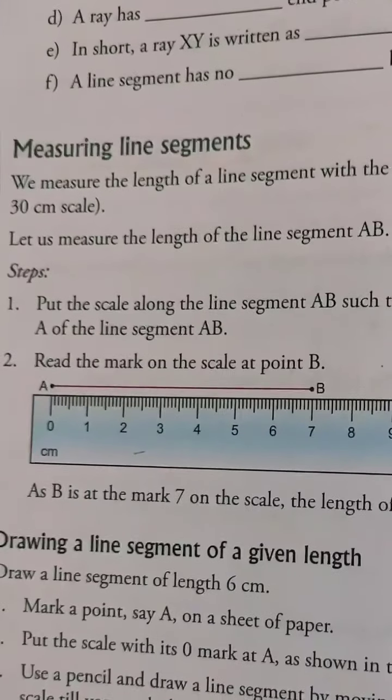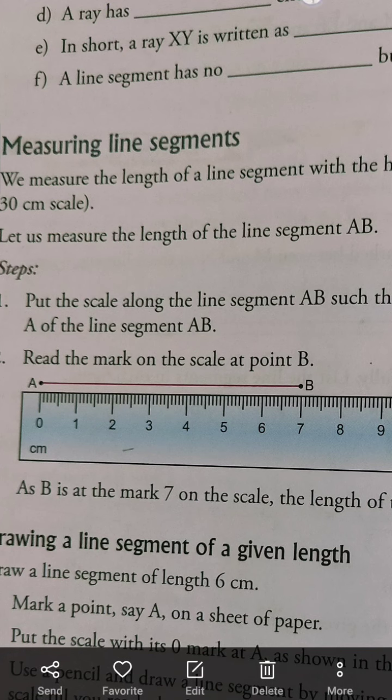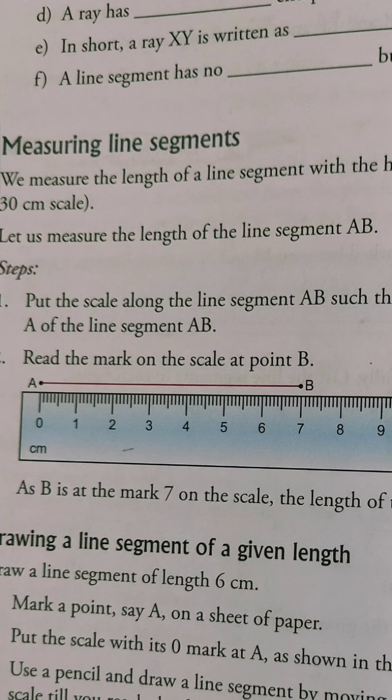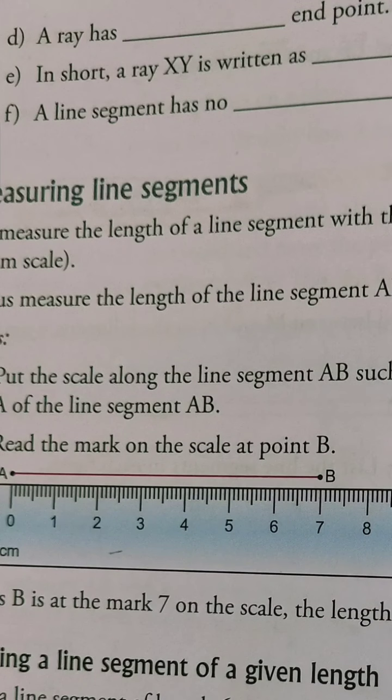Next, coming to the next part, that is part D. A ray has blank end point. We just studied this. We took the example of a ray. A ray has one specific end point. The second one is not specific, it continues from there. So we can say a ray has one end point.